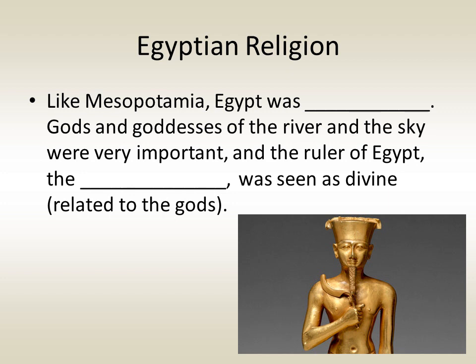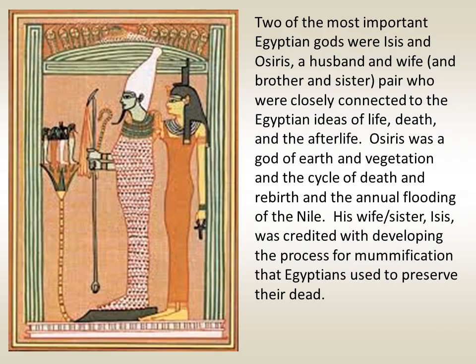Like Mesopotamia, Egypt was polytheistic, having many gods. Gods and goddesses of the river and sky were very important, and the ruler of Egypt, the pharaoh, was seen as divine — related to the gods. Two of the most important Egyptian gods were Osiris and Isis, a husband-and-wife and brother-and-sister pair closely connected to Egyptian ideas of life, death, and the afterlife. Osiris was a god of earth, vegetation, and the cycle of death and rebirth. His wife Isis was credited with developing the process of mummification used to preserve the dead.